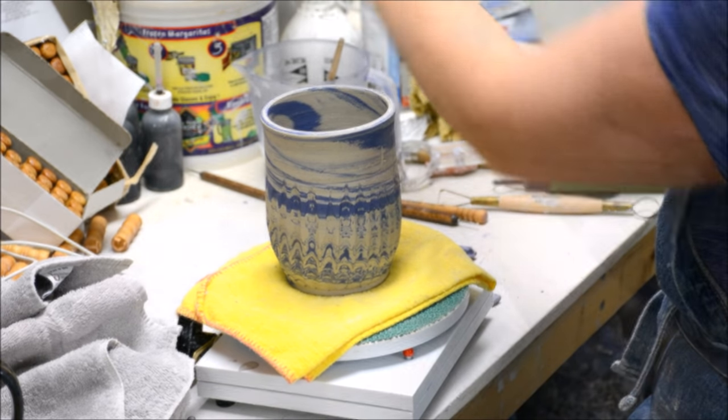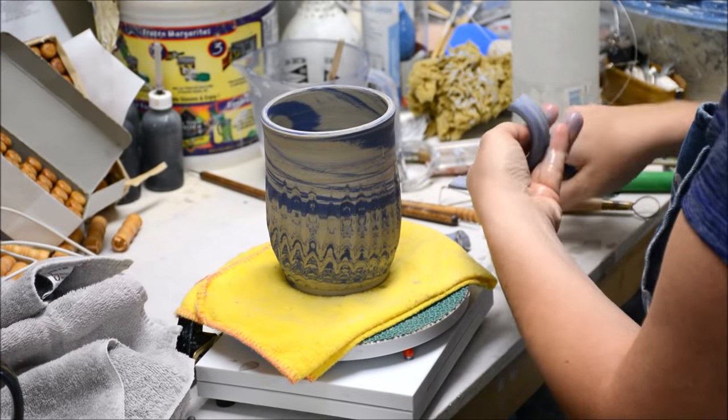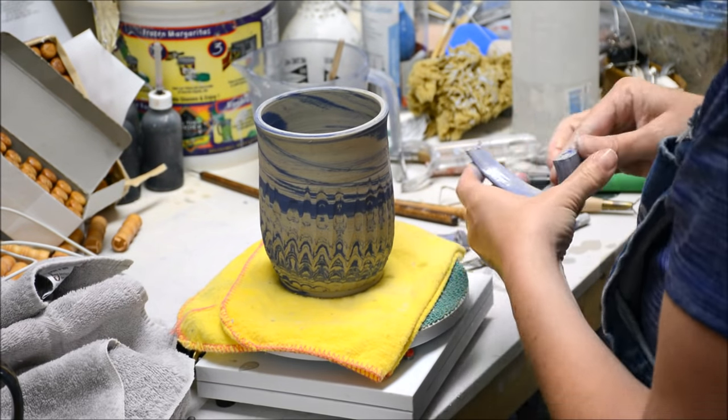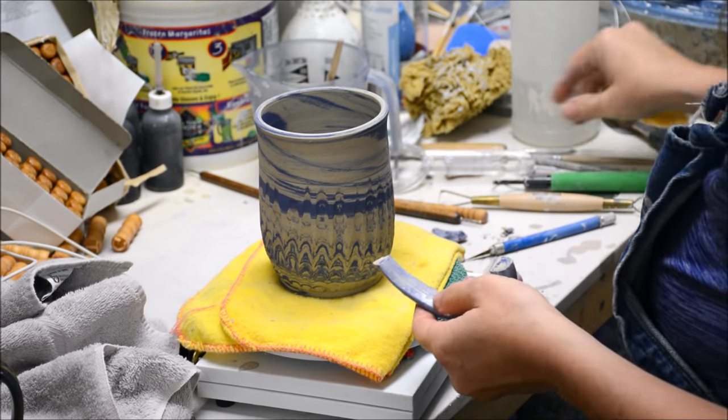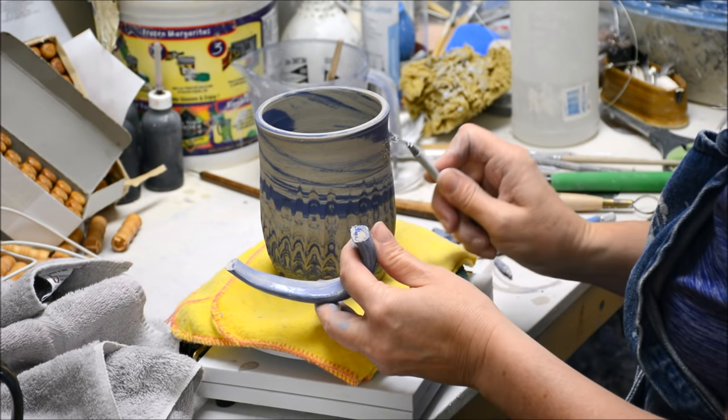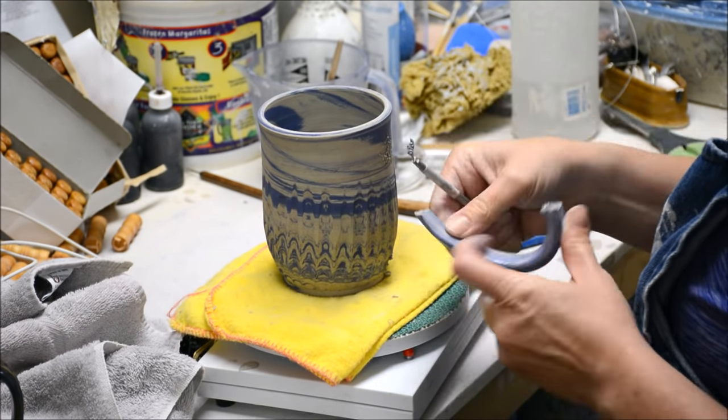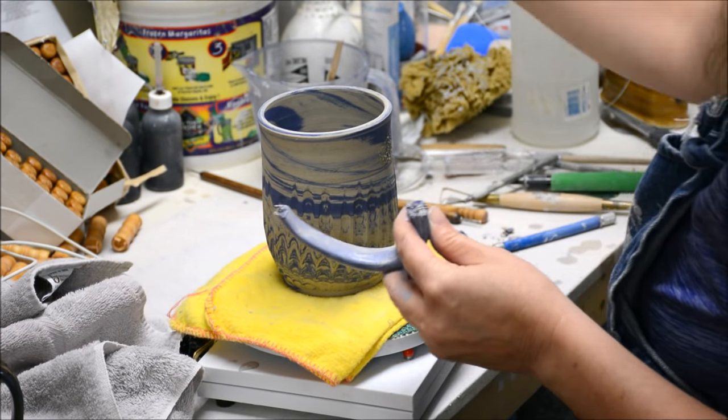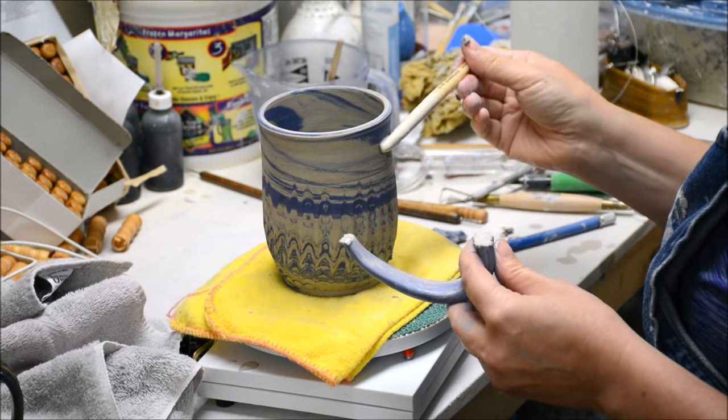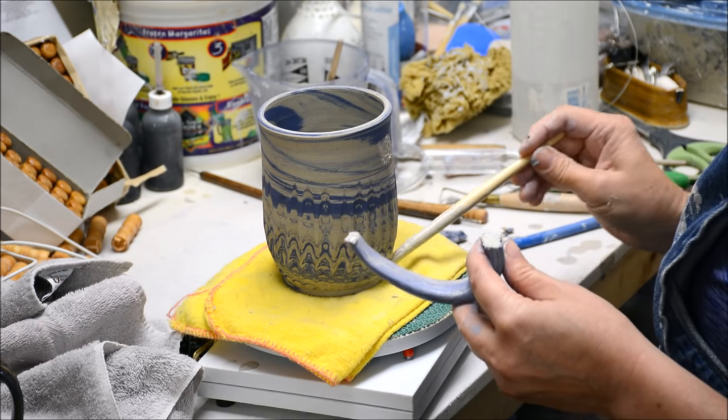I'm then trimming off the ends with the X-Acto. I do have to spritz down this handle, it got a little bit dry. And I trim it a little bit more precisely to get the contour to match the cup a little bit better. And then I am going to score and slip very well the attachment between the handle and the cup.